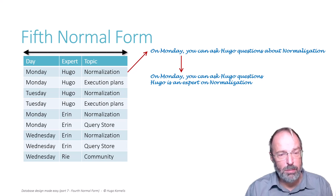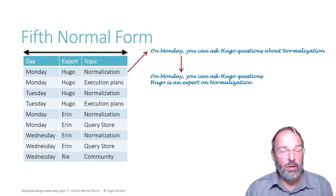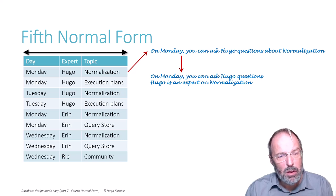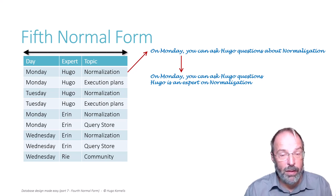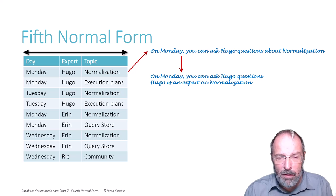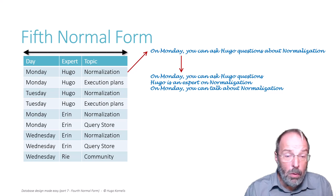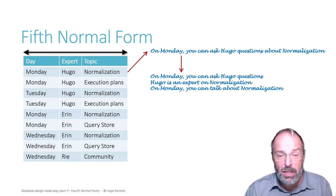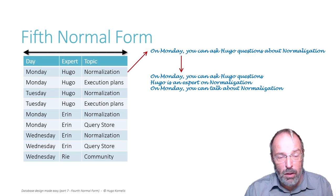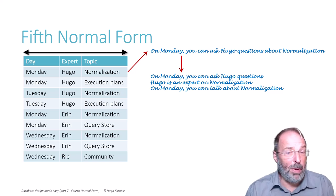A schedule for an Ask the Experts corner where every row represents a fact of the type: on Monday you can ask Hugo questions about normalization. We concluded that hidden within that sentence are two other facts: on Monday you can ask Hugo questions, and Hugo is an expert on normalization. However, there is even a third fact hidden in that sentence, which is that on Monday you are allowed to talk about normalization in the Ask the Experts corner. We didn't include this fact in the previous video because in that universe of discourse it was apparently not relevant.